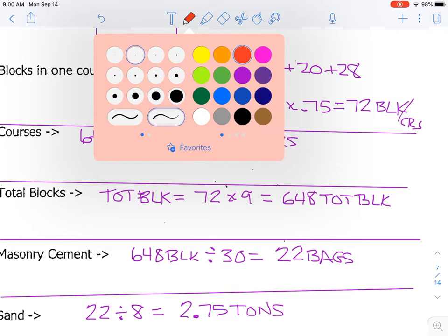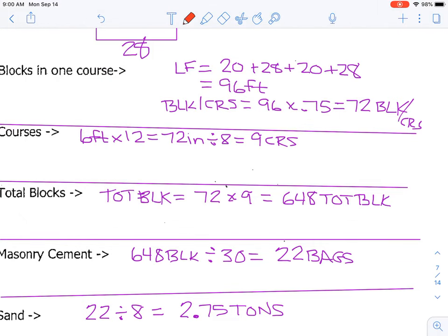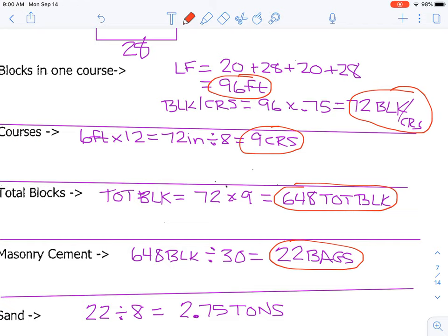So let me go back and just point out a few things. We very first found linear feet. And then we multiplied that linear feet by 0.75 to get the total number of blocks in a course. We calculated the number of courses that we need. That allowed us to determine the total number of blocks. We divided by 30 to get the bags of masonry cement. And then we divided by eight to get the number of tons of sand.